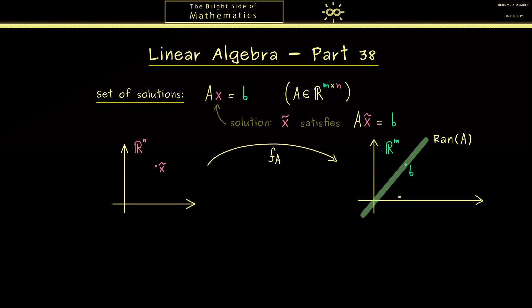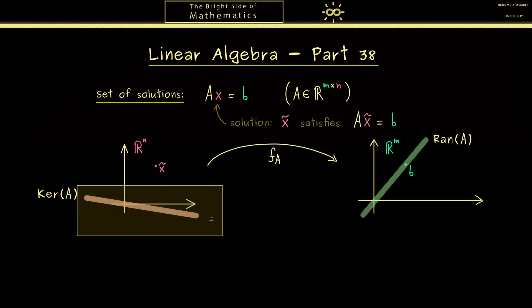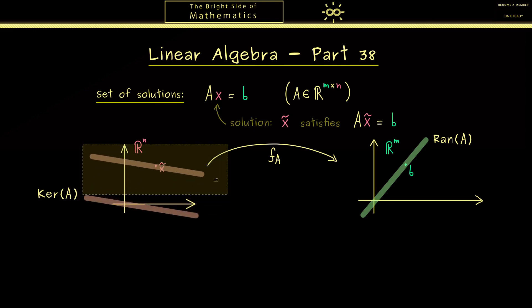You can remember the range of A already tells us about the existence of solutions. But now if indeed b lies in the range of A, we know there exists at least one x̃ such that x̃ is mapped by f_A to b. However, you might remember that here on the left-hand side we find the kernel of A as a subspace as well, and in fact, exactly this kernel can be used to find more solutions.